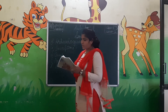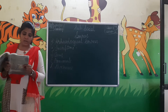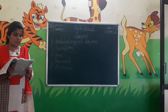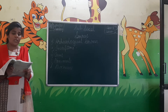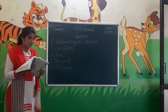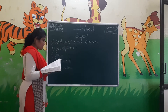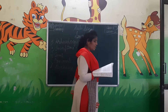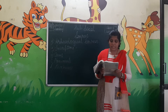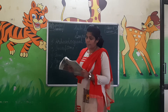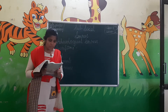Coins help in understanding the geographical extent of the ruler's kingdom — who maintained the coins. From a very small coin we can come to know many things about the geographical extent of a kingdom and who maintained it. They also help us in knowing the language of administration, the titles that the kings possessed, and their religion.